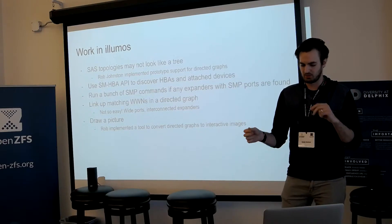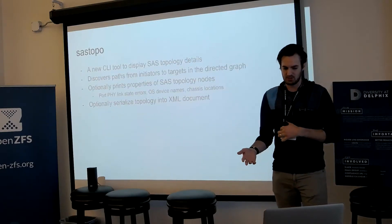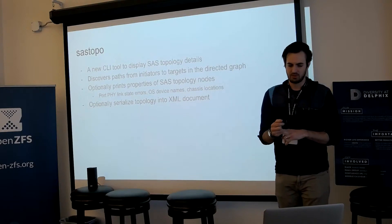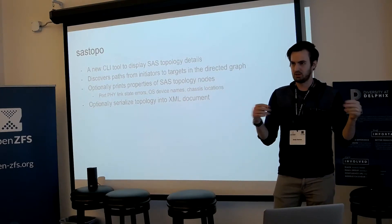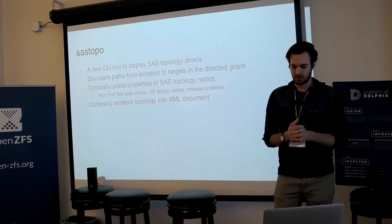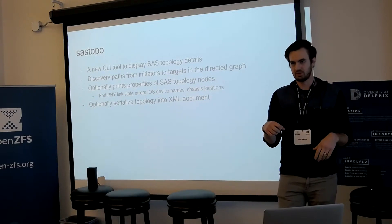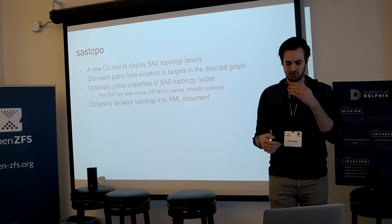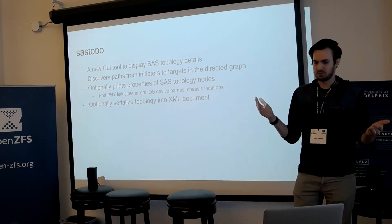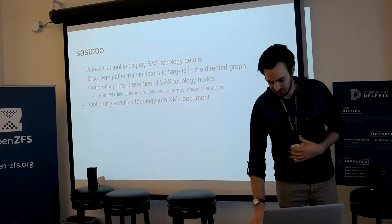We can get some information from the SMHBA API. We wrote a utility to run a bunch of SMP commands — the Serial Management Protocol — against any expanders that have SMP ports available. By doing that we can figure out the worldwide names of disks behind a phy and what those are attached to using worldwide names. You can also get phy-link error state counters through SMP. So now we can link up matching worldwide names in a directed graph and draw a really cool picture. Rob implemented a tool to convert directed graphs into a really nice webpage. The first tool, SAS Topo, is like FM Topo on Illumos crossed with LSI util.